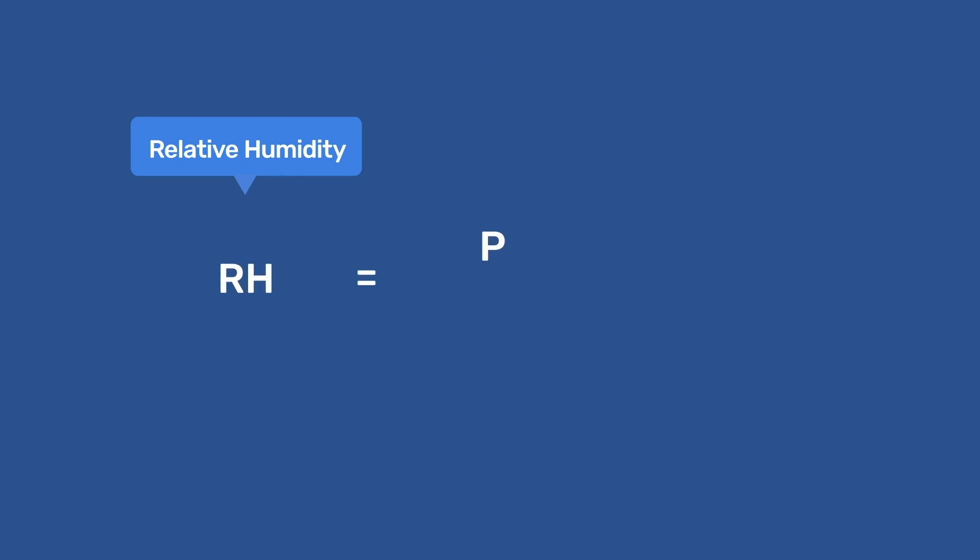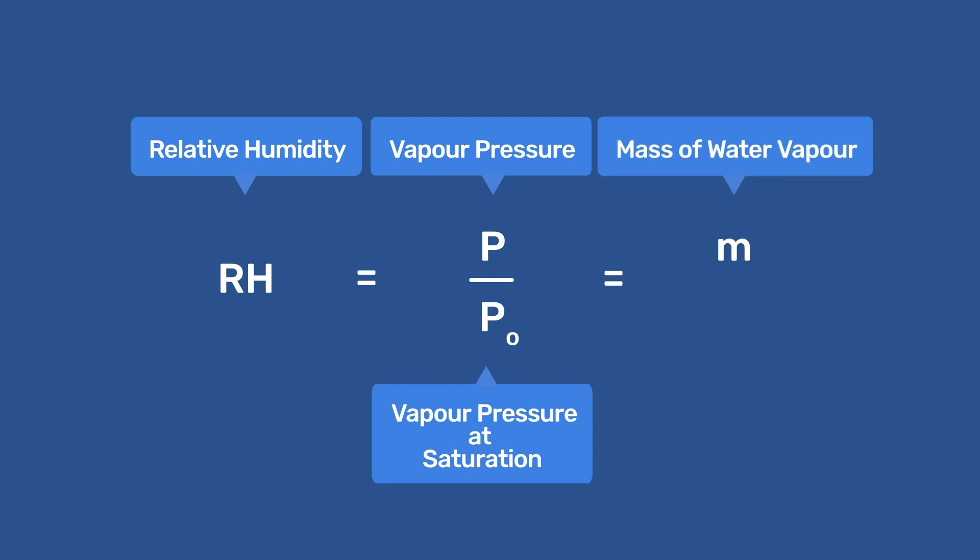is the ratio between the partial pressure of water in air, P, and the vapor pressure at saturation, P0, which is equivalent to the mass ratio of water vapor present in air, M, to the maximum amount at saturation, M0.